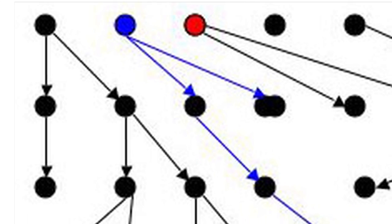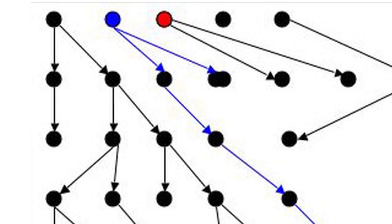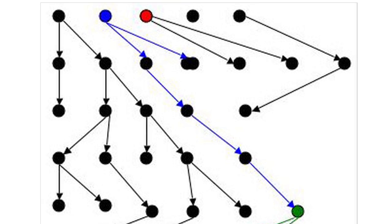It should be obvious, but in case it needs repeating, Y-chromosomal Adam is not the first human. He is the most recent common ancestor of all currently living men.